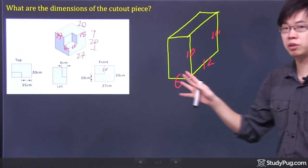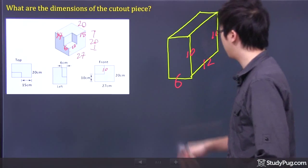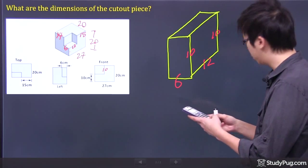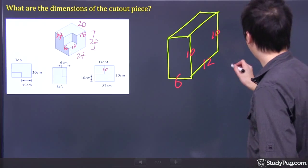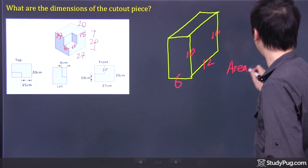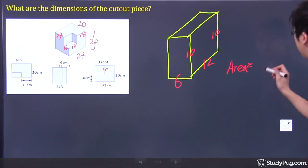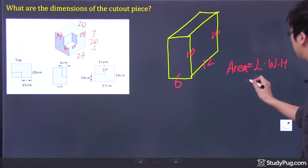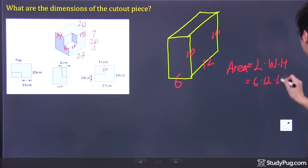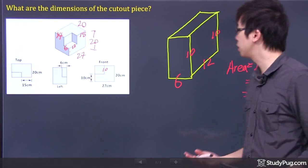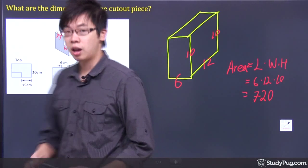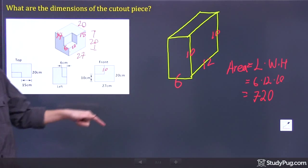So it's 6 times 12 times 10 for this cutout piece. And if you want to figure out the area right now, 6 times 12 times the 10, we got our area turns out to be, it's just length times the width times the height, right? So we got ourselves 6 times the 12 times the 10, we have 720. So that 720 is the area, and the dimension for this question is 6 times 10 times the 12.